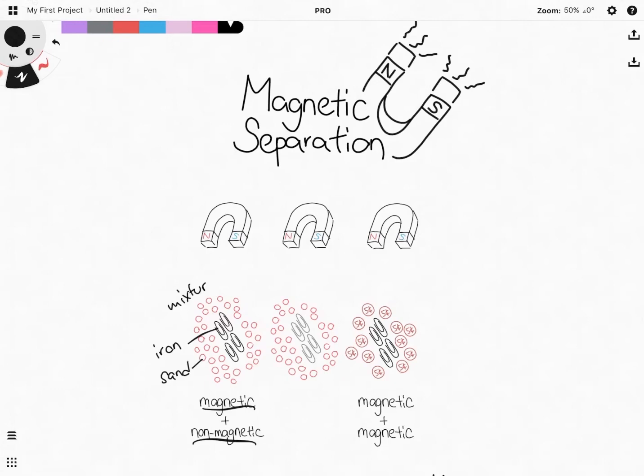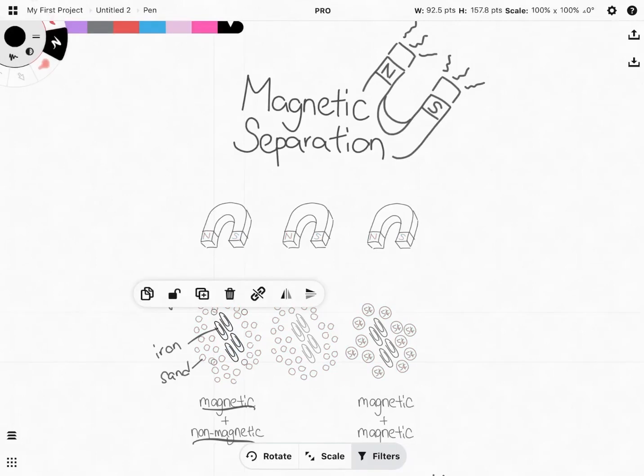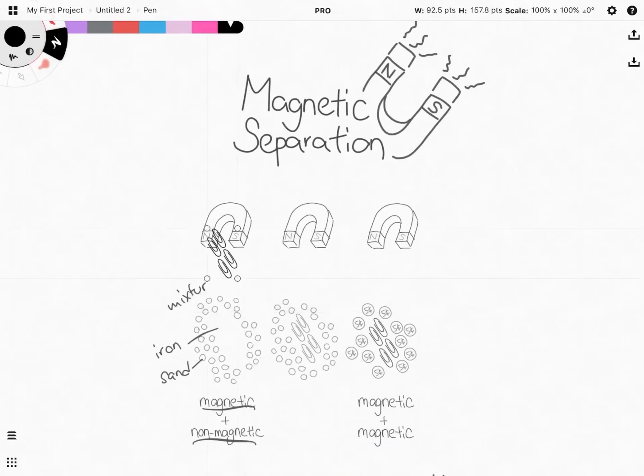If I were to hover a magnet above it, several things can happen. The first and most obvious thing that you can think of is that the magnetic iron clips will be attracted to the magnet.